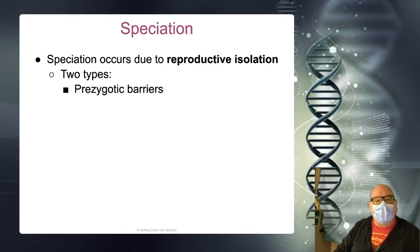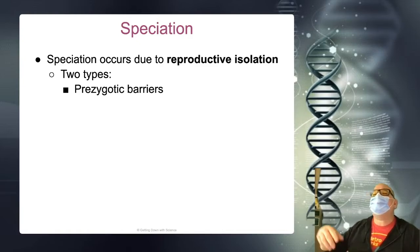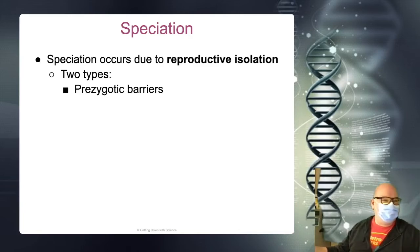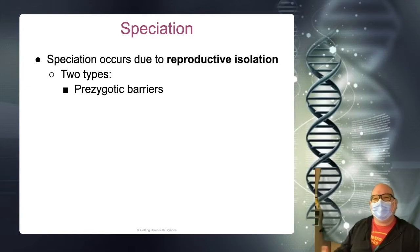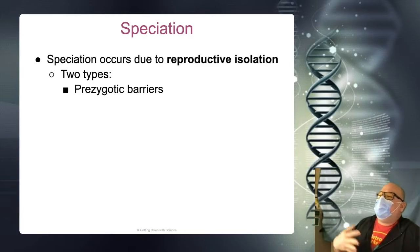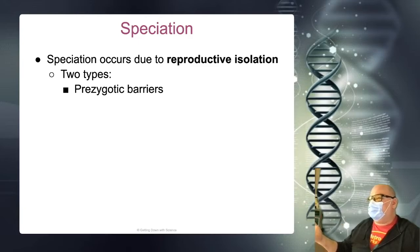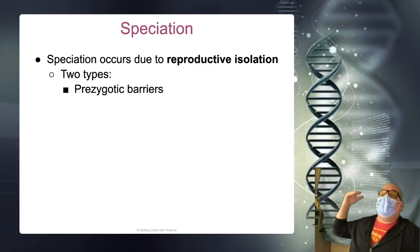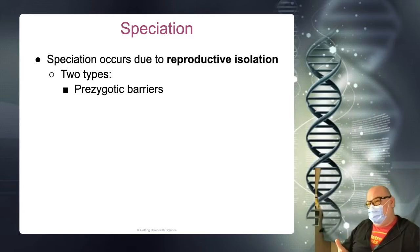Prezygotic barriers. Everybody know what a zygote is? What's the equation for a zygote? Sperm plus egg equals zygote. So prezygotic barriers would mean we can't get the sperm and egg together. There are a lot of ways that could happen.